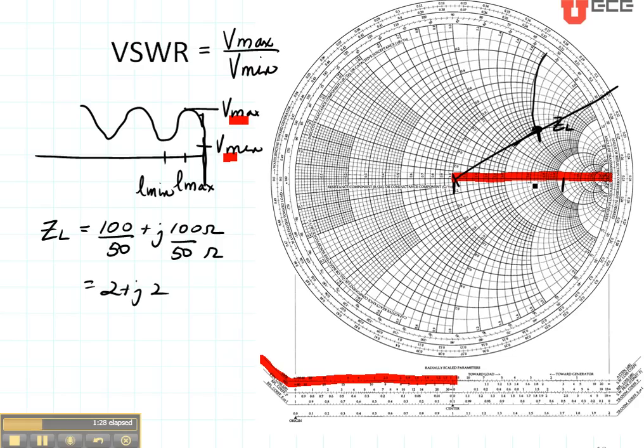Let's read this value. Looks like it's 3, 4, 5, 6. We have a standing wave ratio of 6.